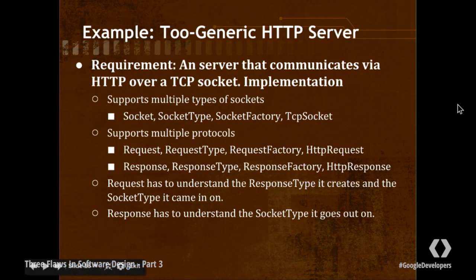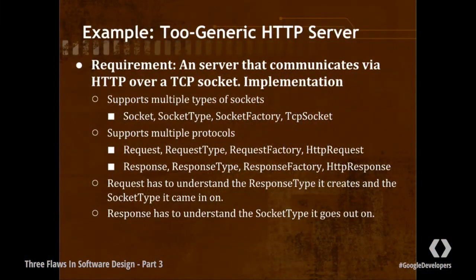Let's give an example. Let's say that I want to write an HTTP server that communicates over a TCP socket. I have a bunch of time on my hands, and I think I'm the world's best developer, and I just want to do an awesome job. So I'm going to really over-engineer it. I'm going to think, there might be other types of sockets other than TCP sockets in the future, so we should have a socket, a socket type, and a socket factory to make our sockets, and then have a TCP socket. By the way, any time you see a factory that can only produce one object, that is something to be suspect of.